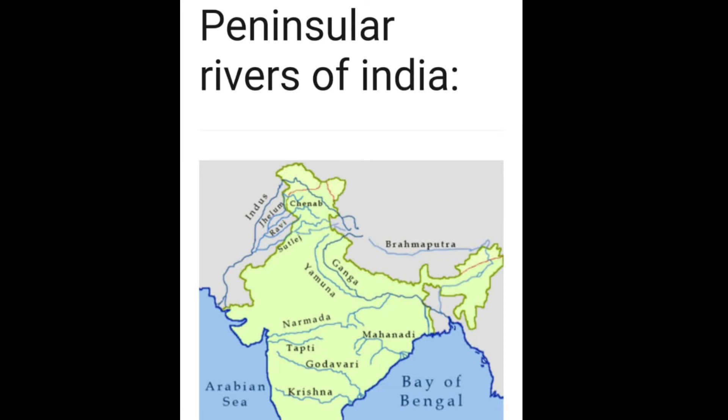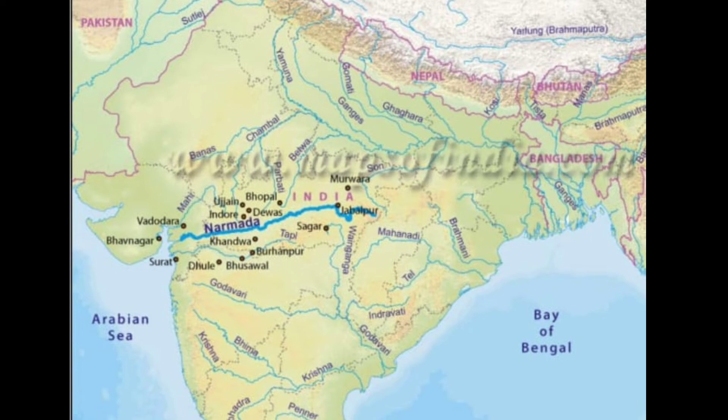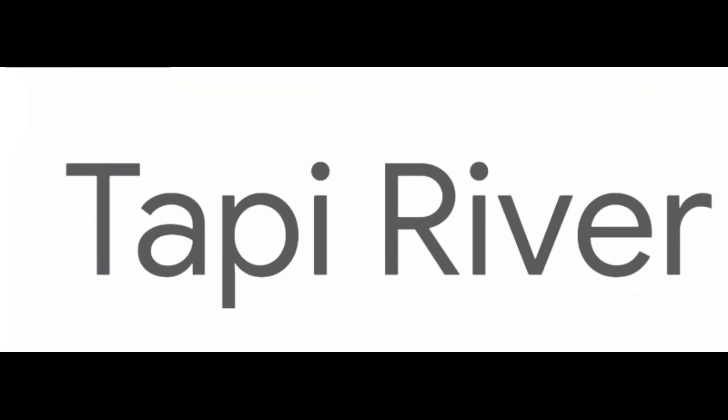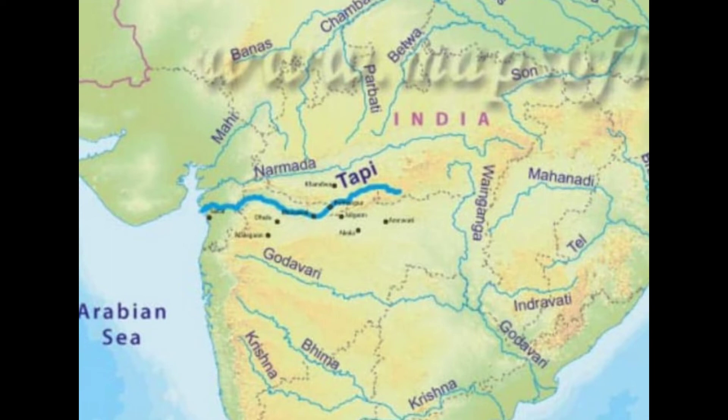The drainage basin of the Peninsular Rivers is comparatively small in size. First is the Narmada Basin. It originates in the Amarkantak Hills of Madhya Pradesh and flows toward the west in a rift valley, sinking into the Arabian Sea. Next is the Tapi Basin. It originates in the Satpura Range in the Betul district of Madhya Pradesh. It flows in a rift valley parallel to the Narmada River, but is much shorter in length.